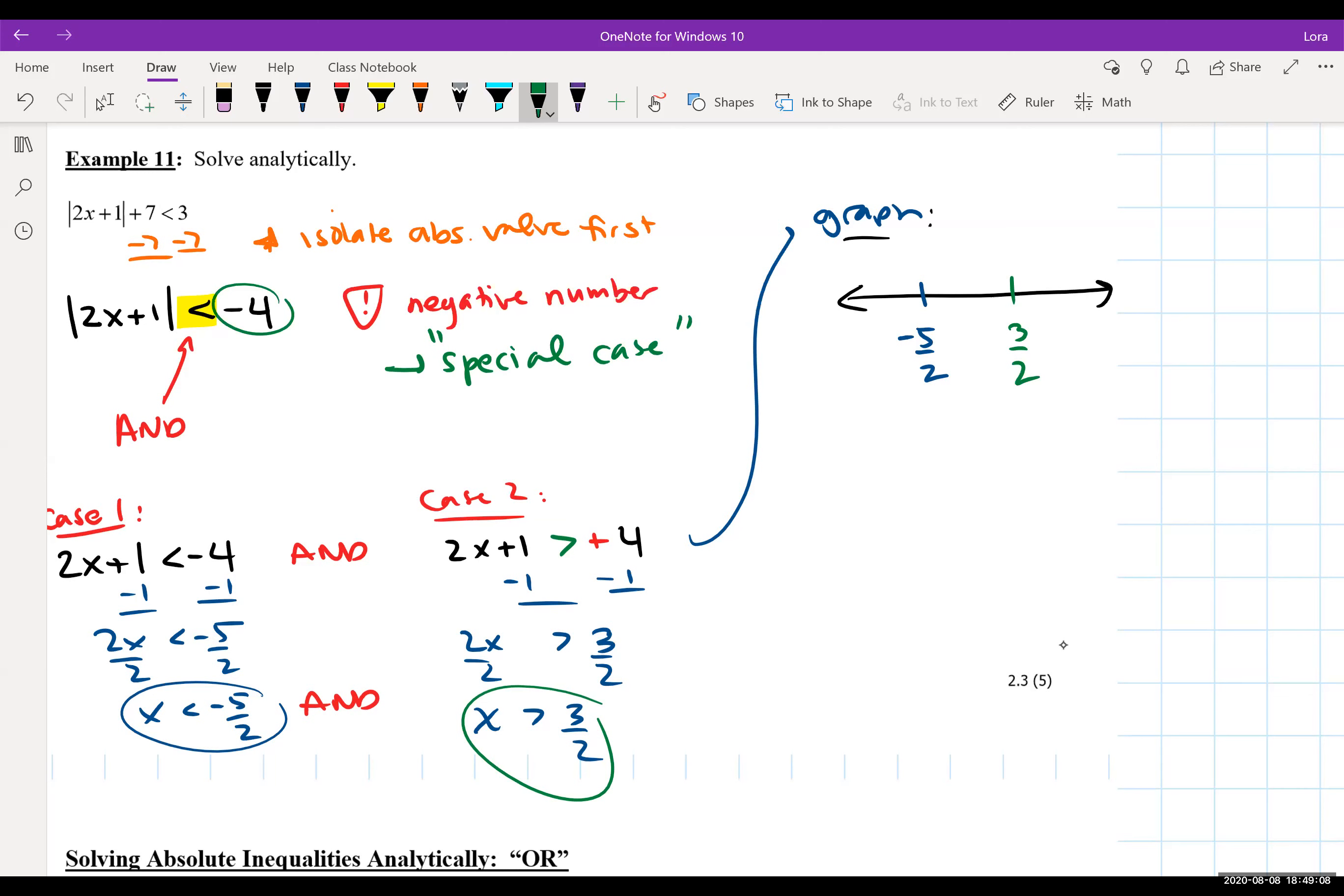So if we're going to graph these linear inequalities, x is less than negative five halves means we'd be shading to the left, and we'd be using a parenthesis opening up to where we shade. And x is greater than three halves means we'd be shading to the right, using a parenthesis opening up to the right.